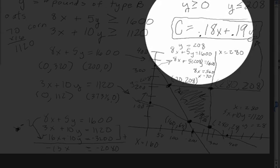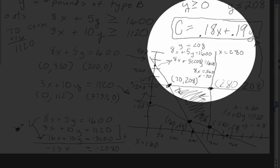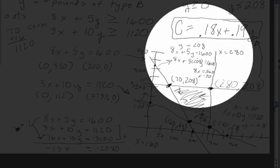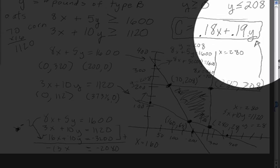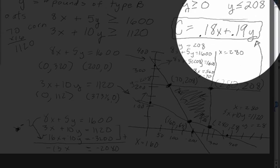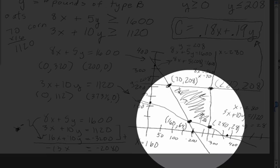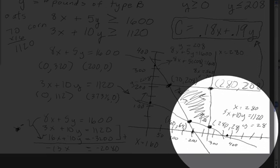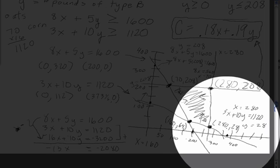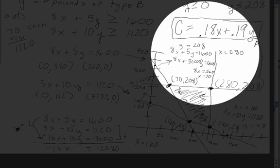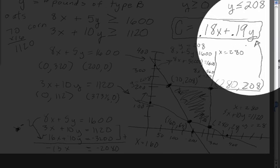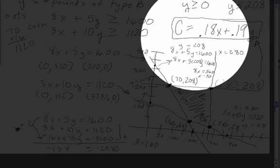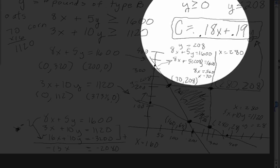In this case, you're trying to minimize the cost. So you plug in each of these coordinates. You plug in the 70 for x and the 208 for y and find out what that cost would be. Do the same thing for 160 and 64, and then do the same thing for 280 for x and 28 for y. See which one gives you the smallest cost, because the farmer is trying to minimize the cost of this production. So once you find the smallest one, that's your answer.